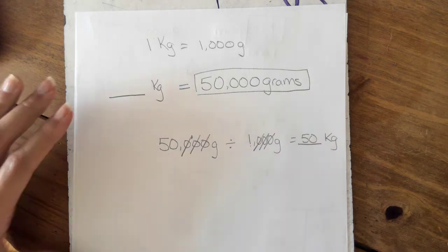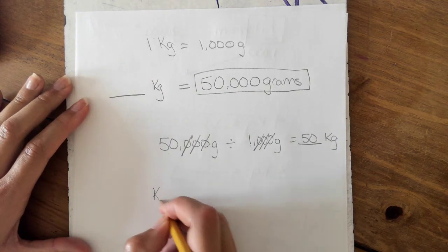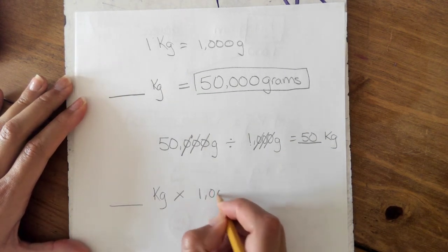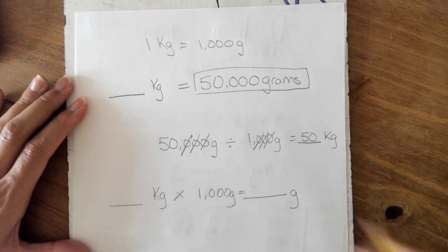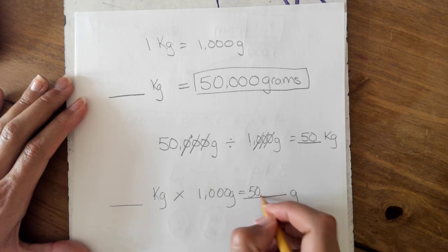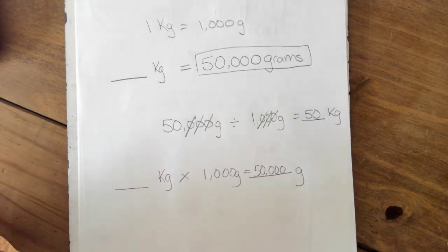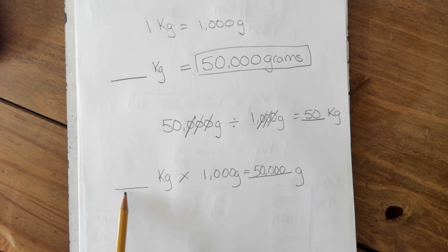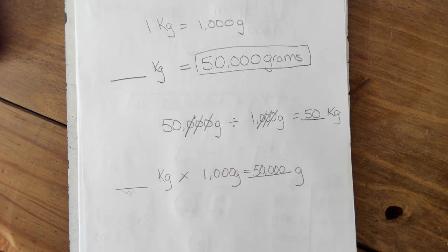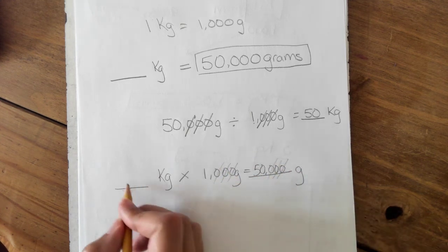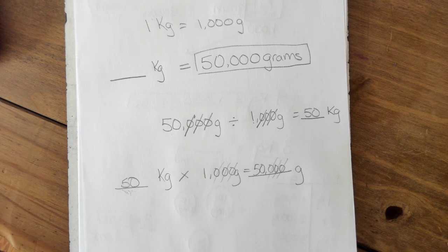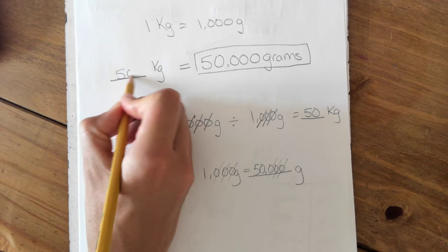Another way of looking at it is: how many kg times 1,000 equals how many grams I have. We could look at this as a multiplication equation, but we're finding a missing factor. And in order to find that missing factor, we are dividing. I could also cross off my zeros and determine that there are 50 kilograms inside of the 50,000 grams.